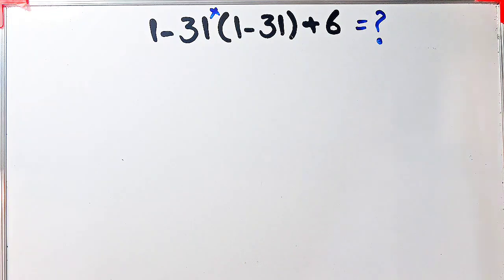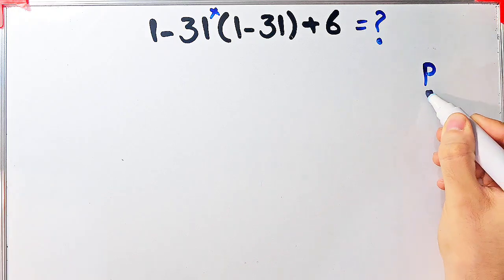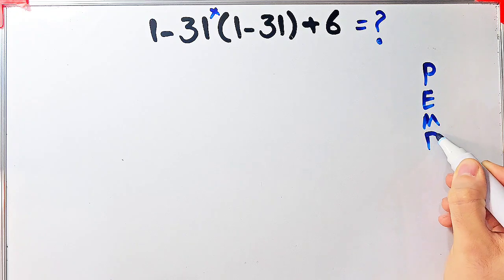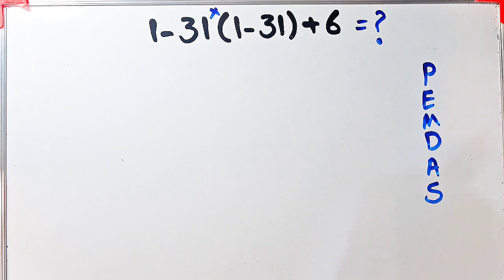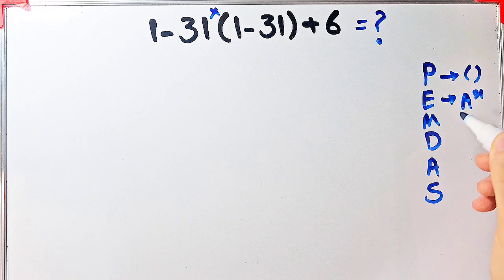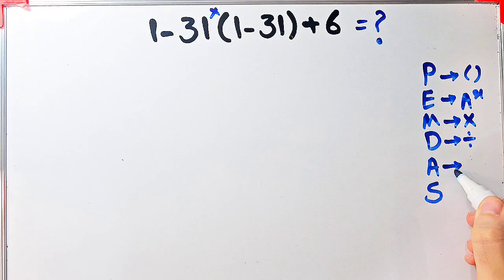To solve this question we need to follow the PEMDAS rule. PEMDAS shows the priority of the mathematical operations, and if you don't pay attention to this rule you get the wrong answer. In this rule, P stands for parentheses, E stands for exponent, M stands for multiplication, D stands for division, A stands for addition, and S stands for subtraction.